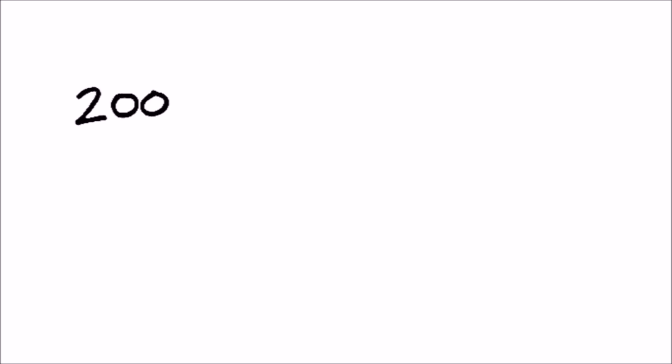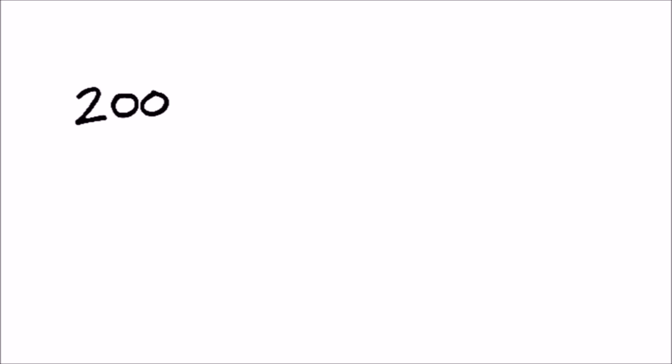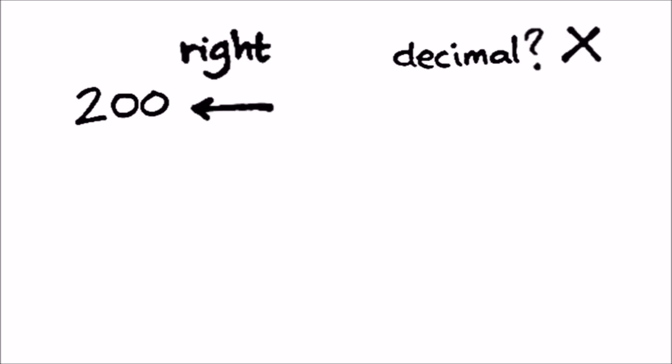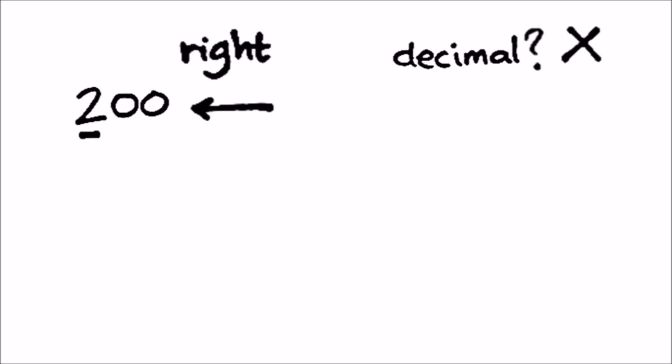How about 200? Is there a decimal point? No. So we start from the right. It hits the first non-zero digit, which is 2. So everything to the left of it is significant. Since there are no others, there is only one significant figure.